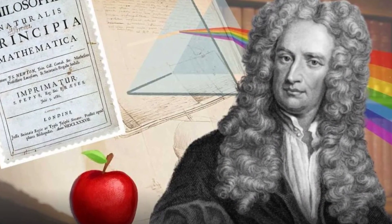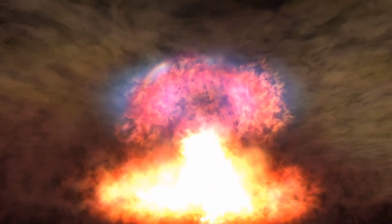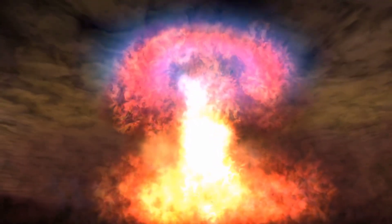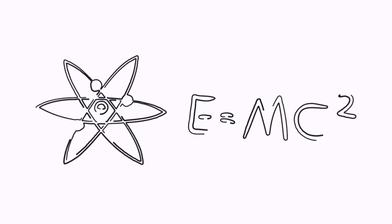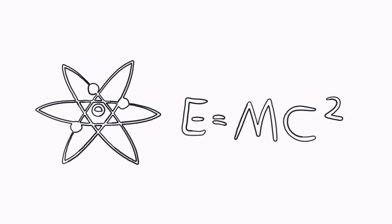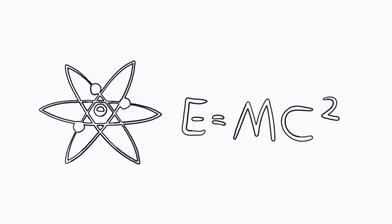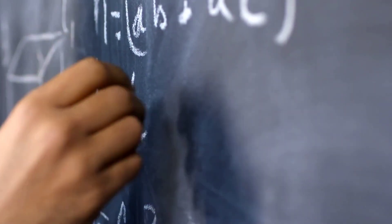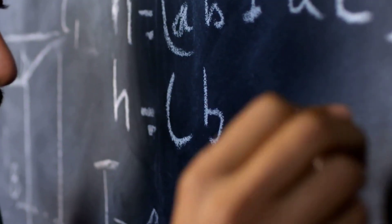This was revolutionary. Before Einstein, mass and energy were thought to be completely separate entities. He showed that even a small amount of mass can be converted into a huge amount of energy, as demonstrated by nuclear reactions in stars and, tragically, in atomic weapons. Einstein realized that if the speed of light is a constant, then mass and energy must be interchangeable — governed by the speed of light squared, an extraordinarily large figure, which explains why a small amount of mass can release an enormous amount of energy.